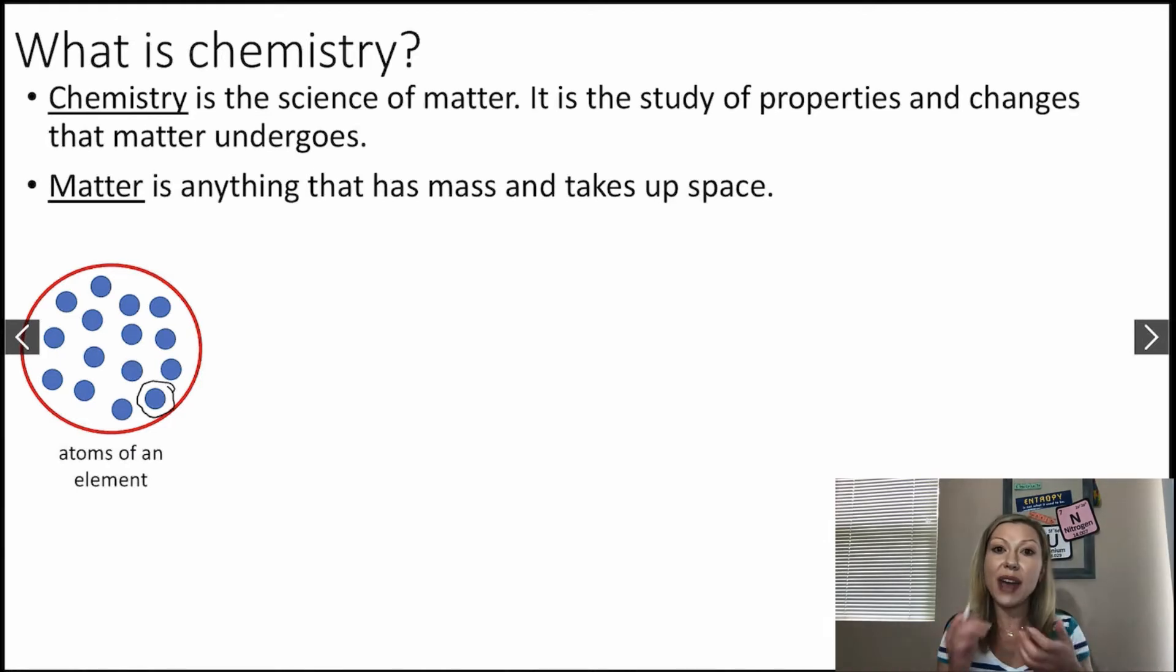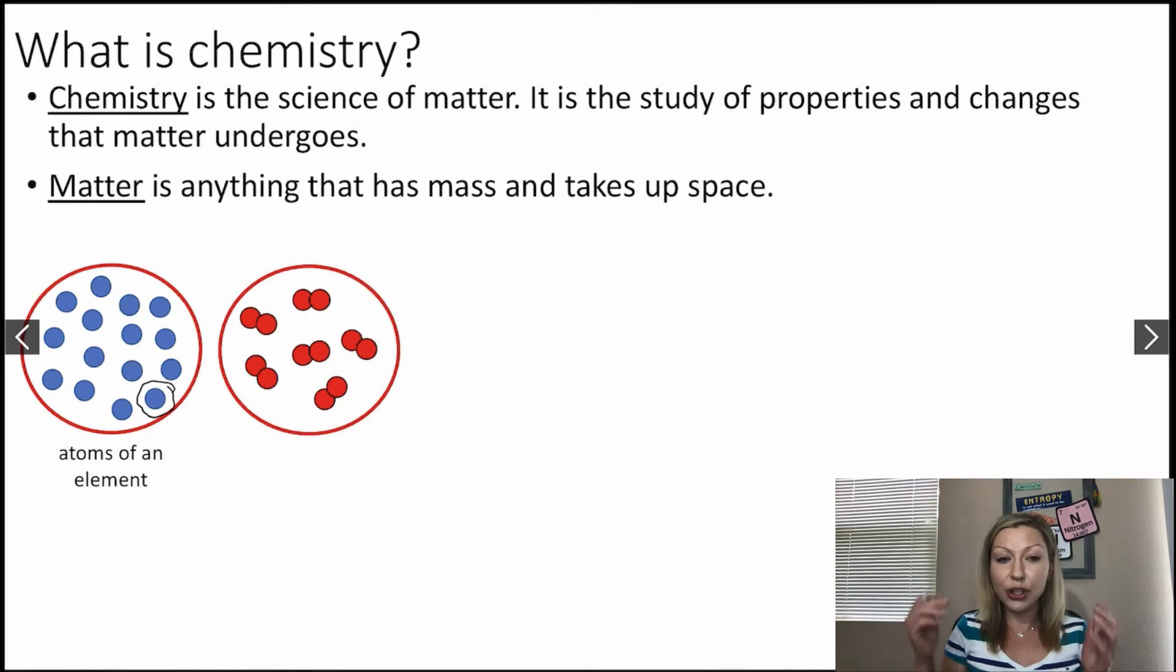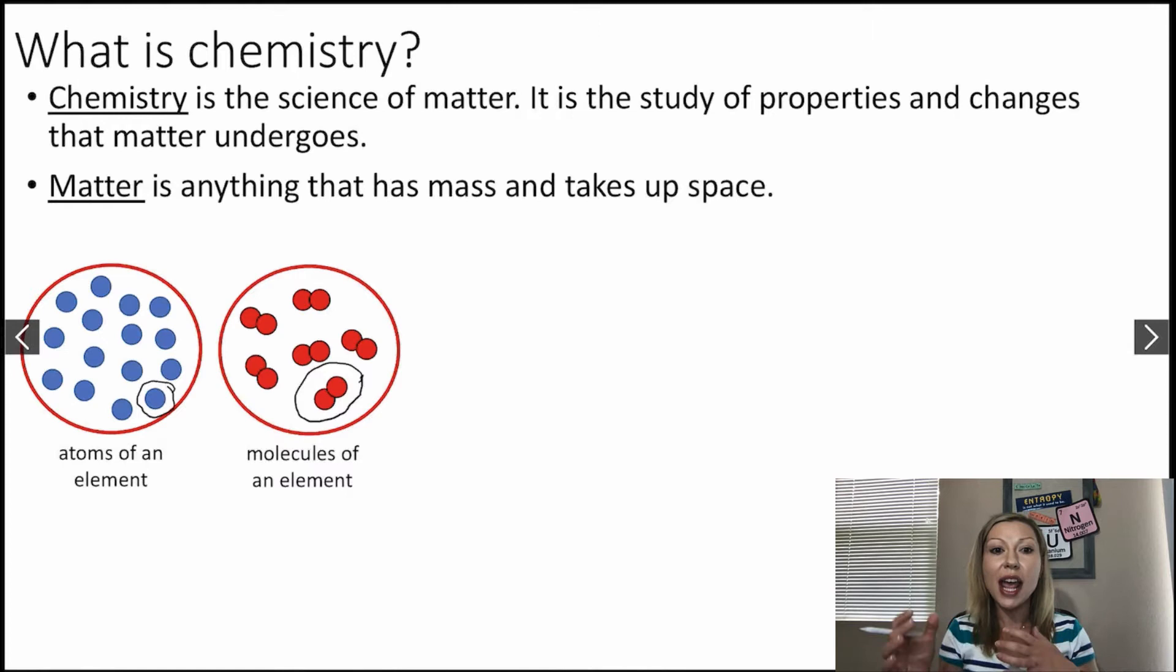What happens if you have several atoms together? Well, if you have the same type of atoms stick together, like here, we are still going to have an element. But in this case, we are going to have molecules of that element. Okay, now what happens when you start mixing together the different types of atoms?